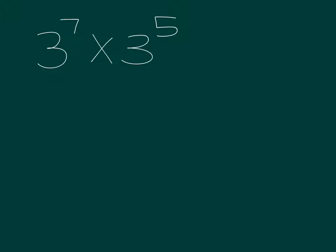The golden rule is if the bases are the same, so when I talk about a base I mean the big number, so if this is the same, you keep the base and add the indices. So, I would write that down if I was you, keep the base, add the indices.